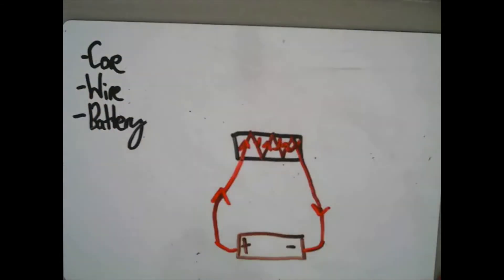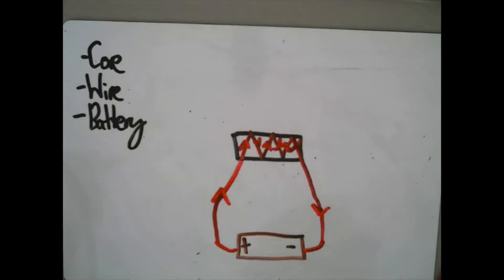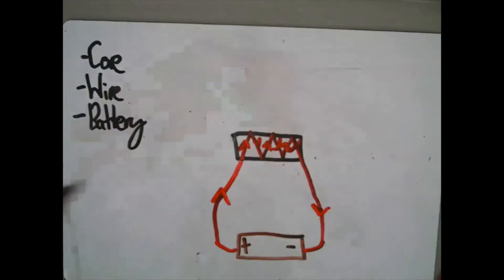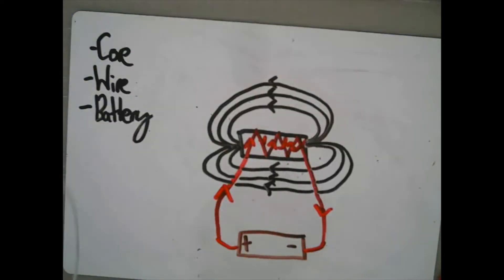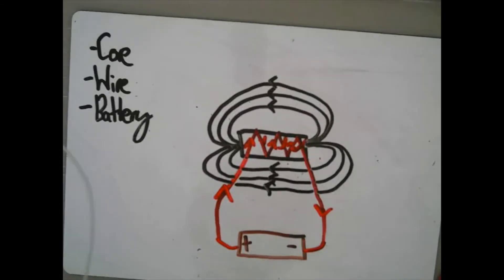We looked last week at how to plot magnetic field lines for permanent magnets. This is similar in an electromagnet, however the magnetic fields are circular. The magnetic field around a single loop isn't very strong, but if you wind lots of loops together to make a coil, you produce a solenoid. When current flows through this, we produce an electromagnet.